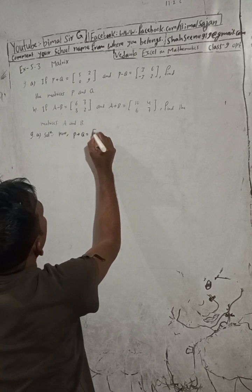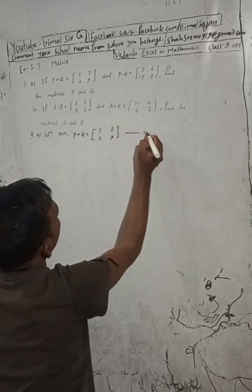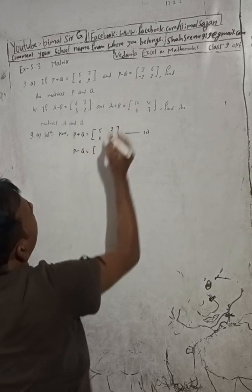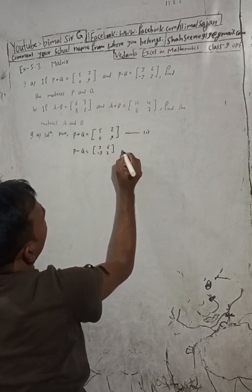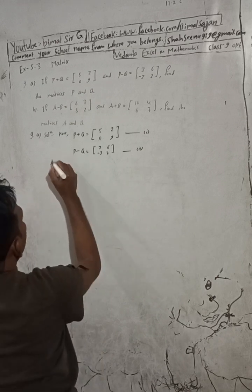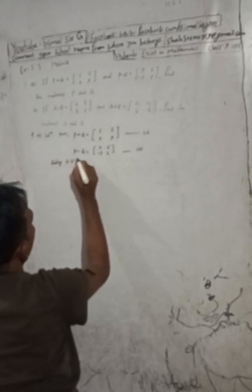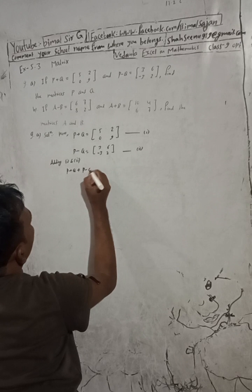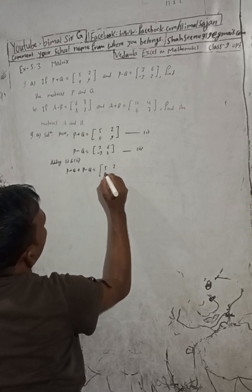P plus Q equals [5, 2; 0, 9] — this is equation 1. P minus Q equals [3, 6; minus 3, 2] — this is equation 2. Now, adding equation 1 and equation 2: P plus Q plus P minus Q is equal to...